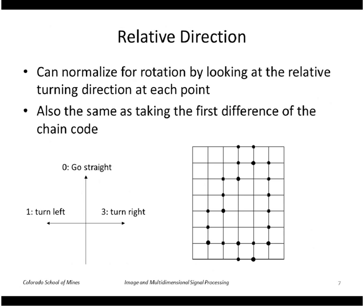We can also make the chain code representation invariant to rotation by simply recording the relative turning direction at each point, which is the same as taking the first difference of the chain code. Namely, we go 0 there's no change, we go straight 1 we turn left, and 3 we turn right. For example, in this example, if I started at this point, I would go in this direction—let's say the first direction is always a 0—and then we turn right so that's a 3, we turn left, we turn right, and then we go straight a number of times, so the code would be 0, 3, 1, 3, 0, 0, 0, etc.